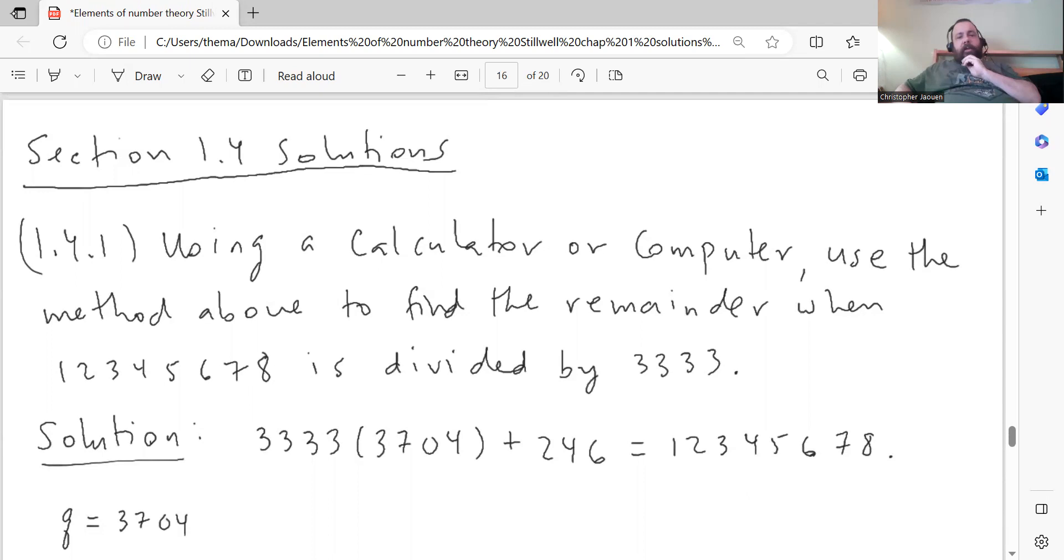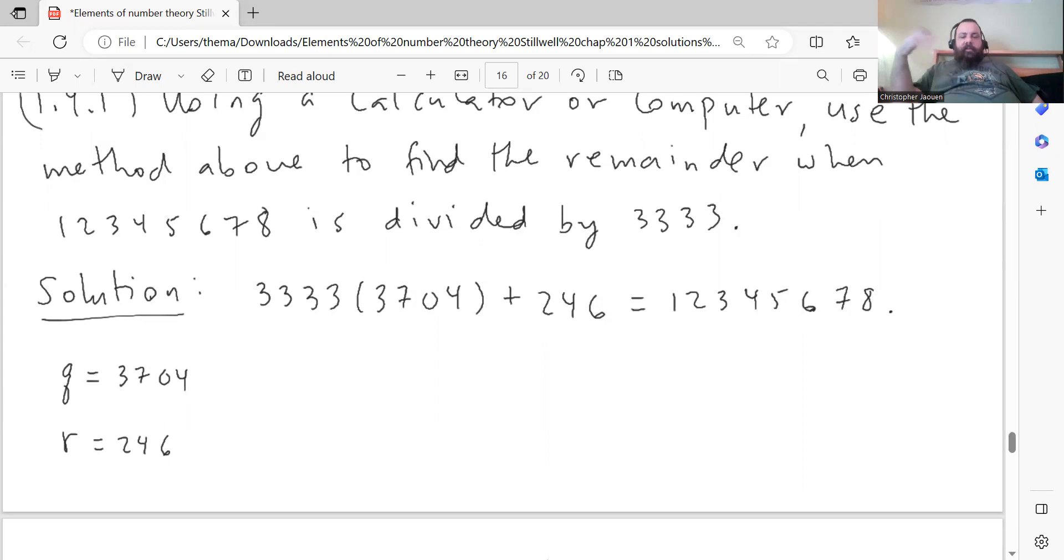Last problem set for section 1.4. Problem 1.4.1 says use a calculator or computer, use the method above to find the remainder when 12345678 is divided by 3333. Using the division algorithm that he has in the section, using the calculator, divide 12345678 by 3333, take the integer part, which is 3704 and subtract it from 3333 times that number, subtract it from 12345678. That gives you the remainder. So you can see that the quotient is 3704 and the remainder is 246.